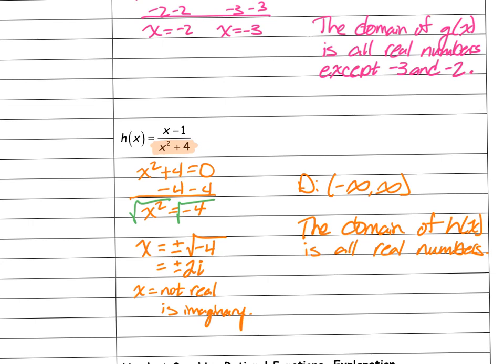If you had three exclusions, you'd just keep adding intervals in order from least to greatest. If you have any questions, please contact us. We'll see you for the second video — have a great day!